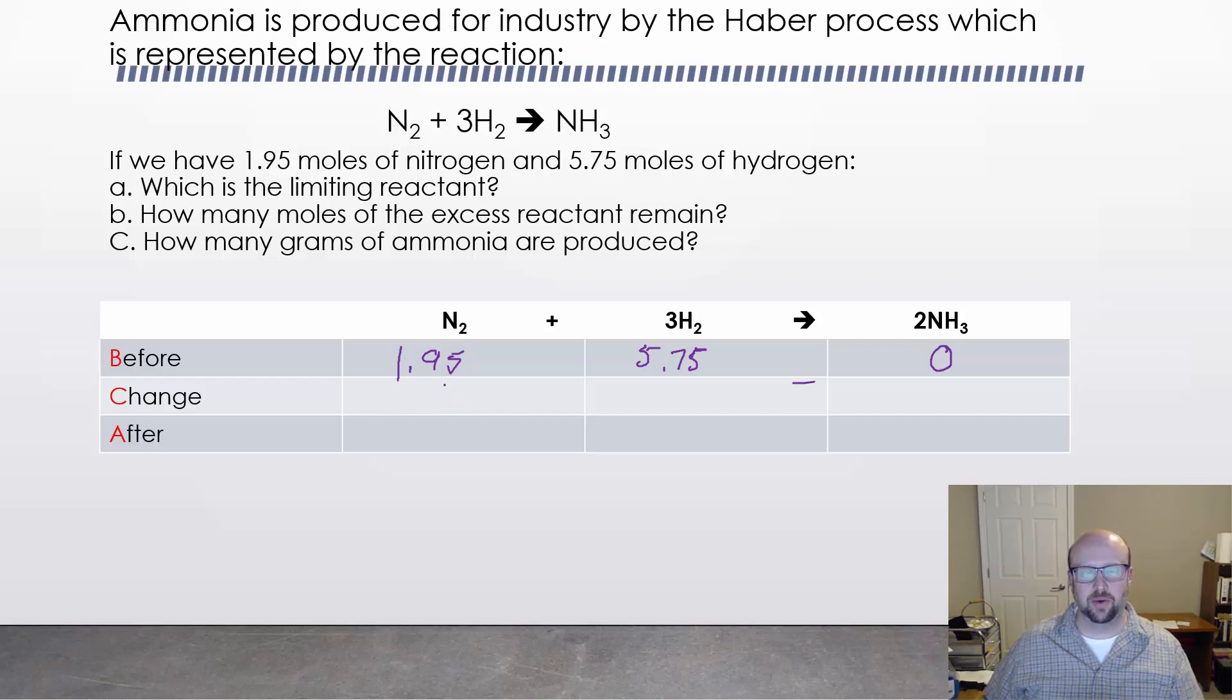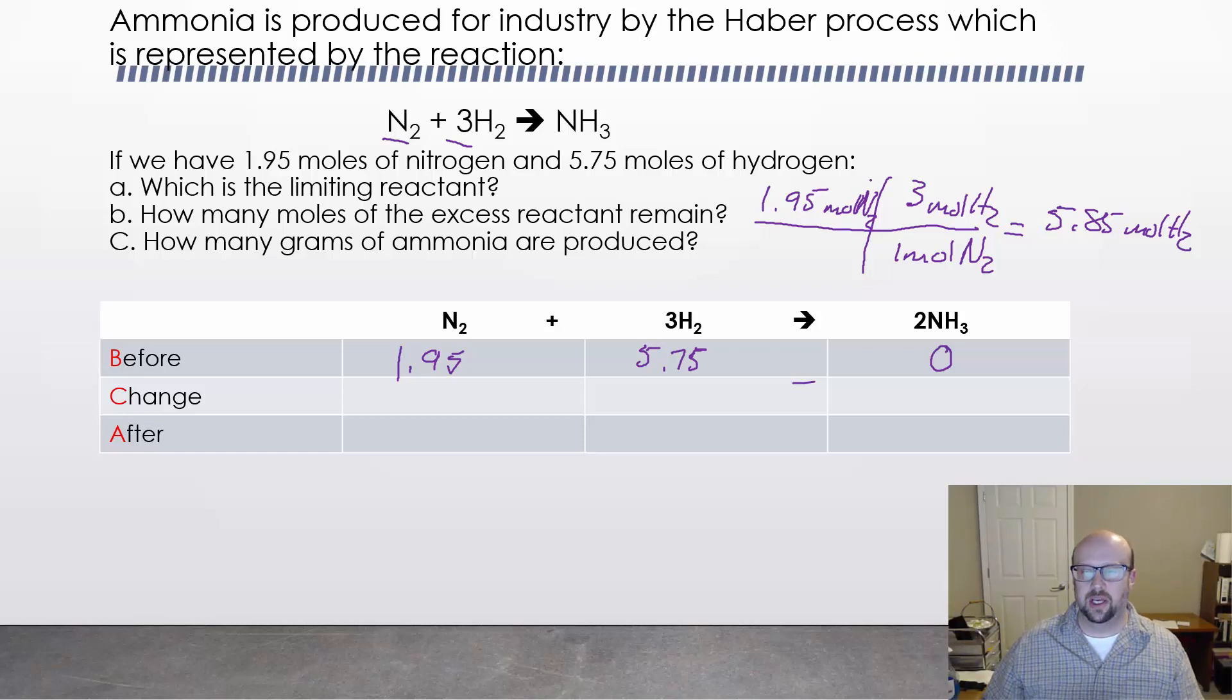Here comes the slightly more complicated part. This is where we would do a traditional limiting reactant thing where we say, which one of these things am I going to run out of first? I've got a lot less nitrogen, it seems like I would run out of that first since I have a lot more hydrogen. But remember that the only way we can really tell that is by doing a quick mole ratio. I've got 1.95 moles of nitrogen, so 1 mole of N2 to 3 moles of hydrogen. When we multiply that out we're going to get 5.85 moles of H2. Now remember that means to fully react with each other, to completely cancel out both of those things, I would need 1.95 moles of nitrogen and 5.85 moles of hydrogen to make that work.